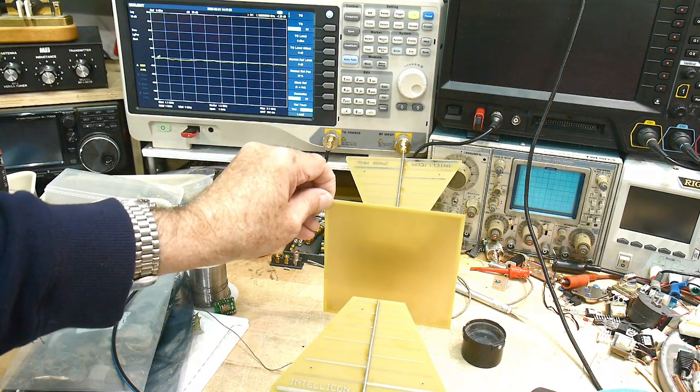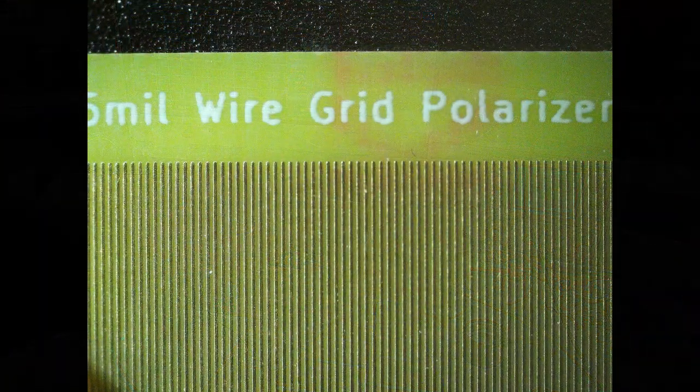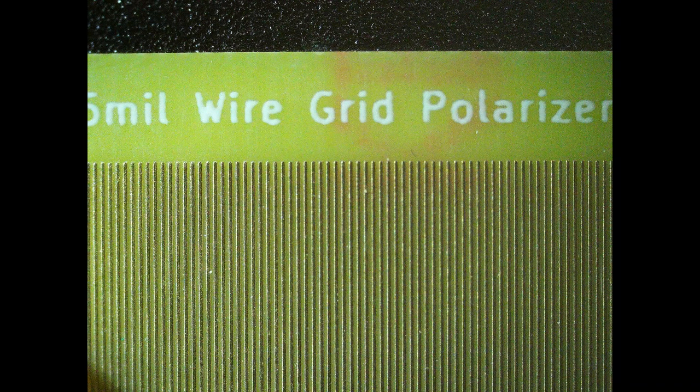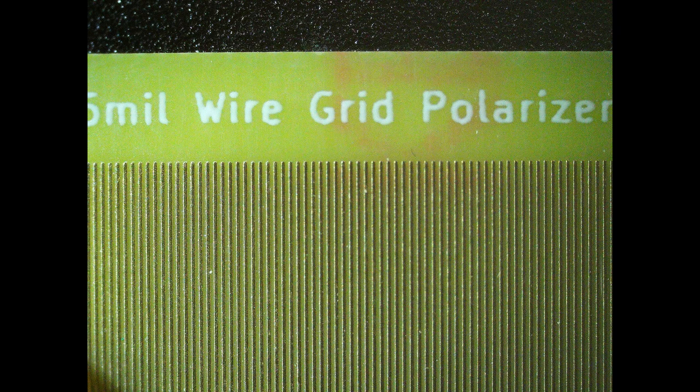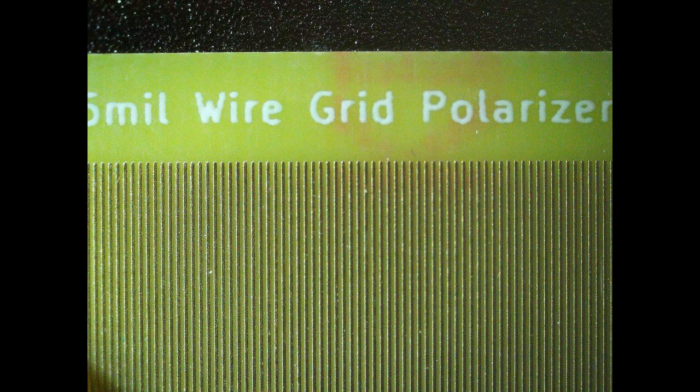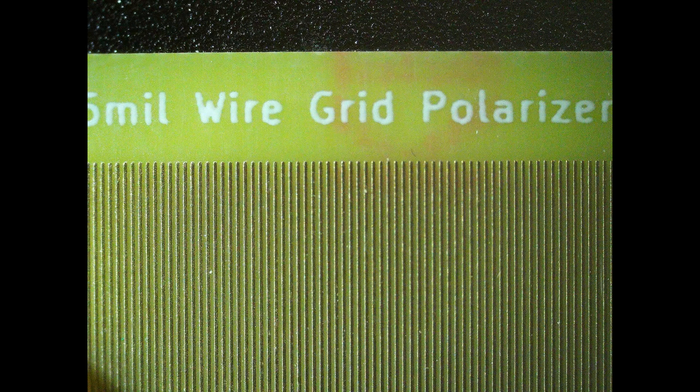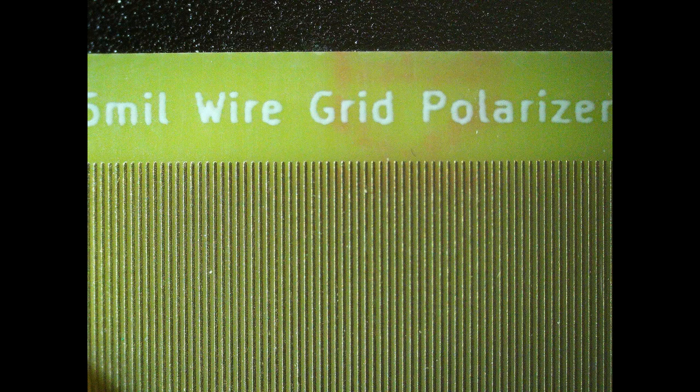You can see here in this macro photograph, the polarizer is just wires all parallel to one another and they're not connected in any way. This particular one was made with five mil wide wires and five mil spacing. My friend has tested this up to 20 gigahertz, so it actually works fairly well. I was using it at one gigahertz in the video.